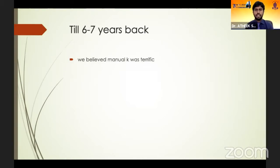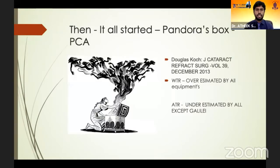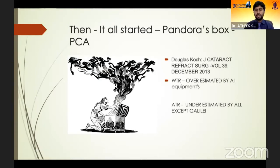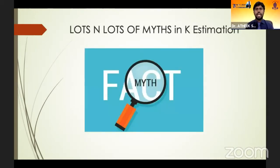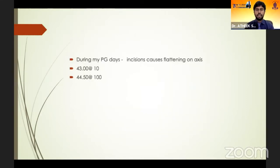Until about six to seven years ago, we believed manual K was an absolutely terrific instrument. Then came the landmark trial by Dr. Douglas Koch, who estimated posterior corneal astigmatism and found it to be significant. This opened a whole new endeavor in keratometry and astigmatism management in cataract surgery. The study found that manual K, second-generation optical biometers, and auto K all give wrong values. Even Pentacam was overestimating with-the-rule astigmatisms, except the Galilei.